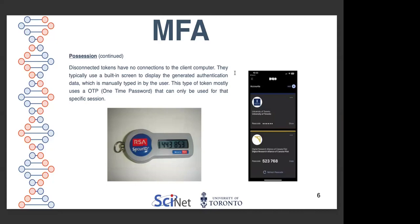As you can see in the graphics, the one on the left is a hardware token that generates a number every minute, and that number can be used only once and only during that minute. The other graphic shows how, for example, Duo is using a cellular phone, and you can get a passcode generated by the Duo app on that cell phone.